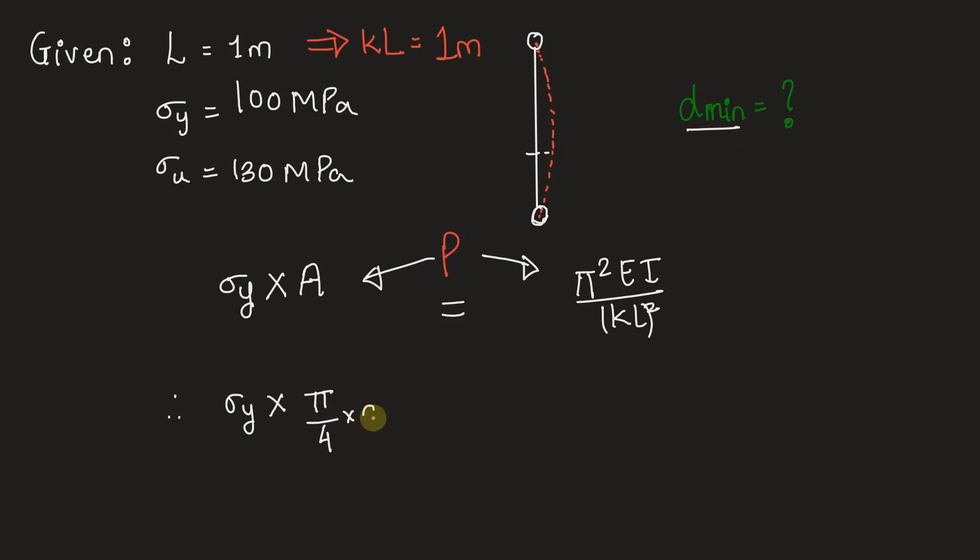Hence we can write sigma y into area of cross section of the rod will be pi by 4, this D that we have to calculate, D minimum square, is equal to—I is also corresponding to this D minimum itself. So we can write pi square EI will be pi by 64, d raised to 4 into KL square we have calculated to be 1. Hence we can take 1 square.